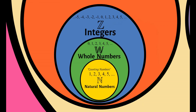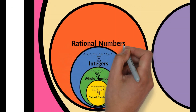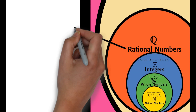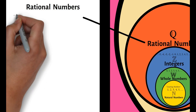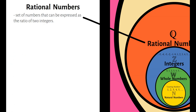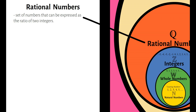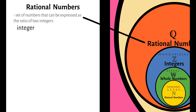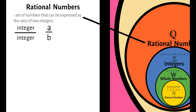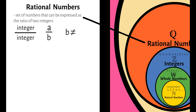The next classification of numbers are rational numbers. Rational numbers are often denoted as this symbol. Rational numbers are the set of numbers that can be expressed as the ratio of two integers, or ito yung mga numbers na pwede natin gawing fractions — so we have integer over integer. Given integer A over B where B is not equal to 0.